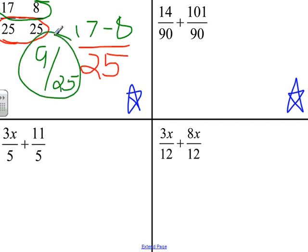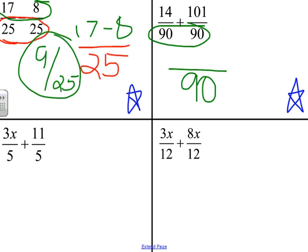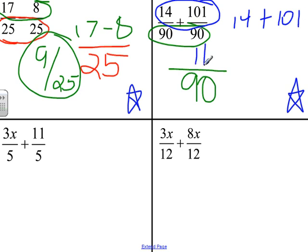Similarly, for this addition problem, our denominator is going to stay the same at 90, as our denominators are in our original fractions, and this time we're going to add the numerators together. 14 plus 101 is 115. So, improper though it is and unsimplified though it is, our answer for the second blue star in the upper right-hand corner is 115 over 90. The same process is true for examples if you have variables.